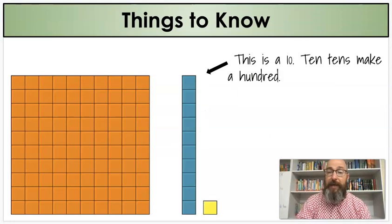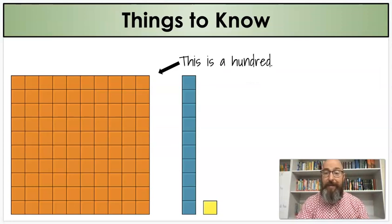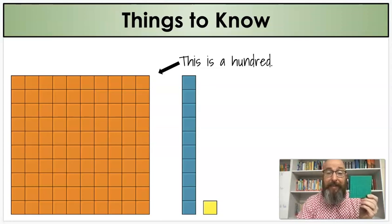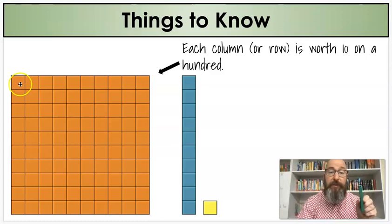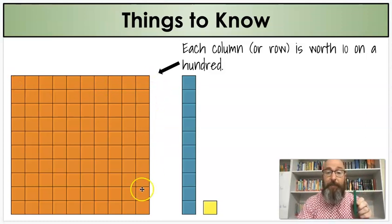Next, you can use these, use our tens, to make a hundred. This is a hundred. It's flat, just a square. And it is made up of our tens. So each row, which is side to side, or each column, up and down, is worth ten.